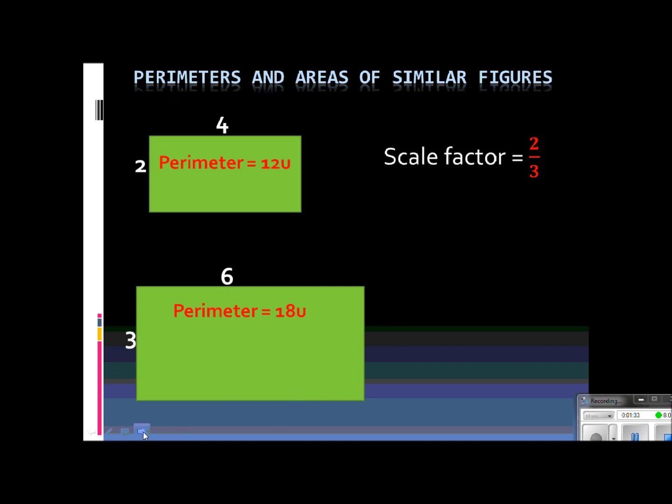Now let's set that up as a ratio, 12 over 18. So the ratio of the perimeters is 12 over 18. But again, whenever we deal with ratios, we want to simplify them. We can divide the top and bottom by 6, which would give us 2 over 3. So please take note here that the scale factor and the ratio of the perimeters are exactly the same.